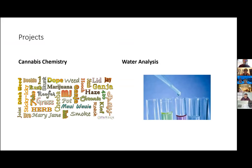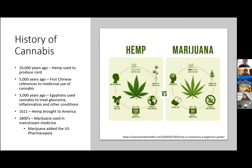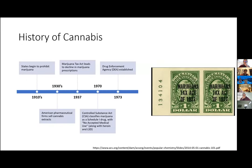Two projects I'm interested in this semester are cannabis chemistry and water analysis. The cannabis chemistry project is in collaboration with Dr. Dow. Cannabis has been around a very long time — like 10,000 years, hemp was used to produce cord. In the 1800s, marijuana started being used in mainstream medicine. Then controls were placed on the substance, and in 1970 it became a Schedule I drug, meaning at the time they said it would have no medical use — but we know now that's not true.